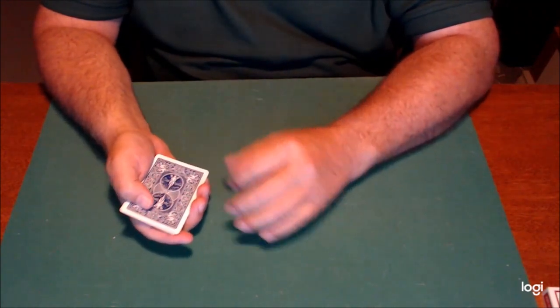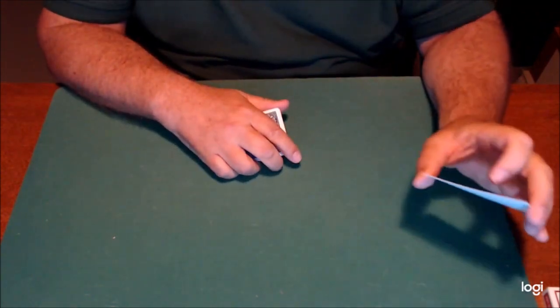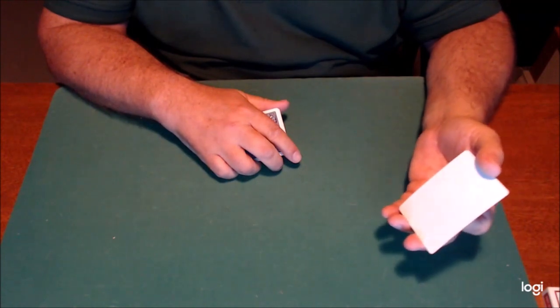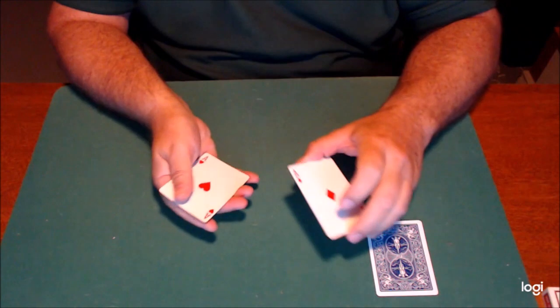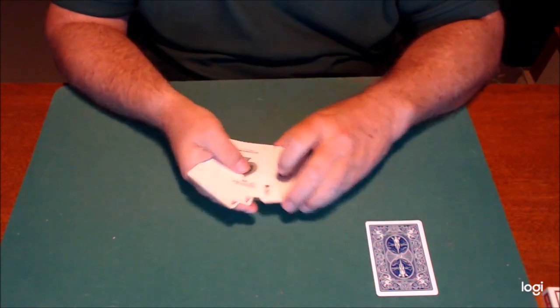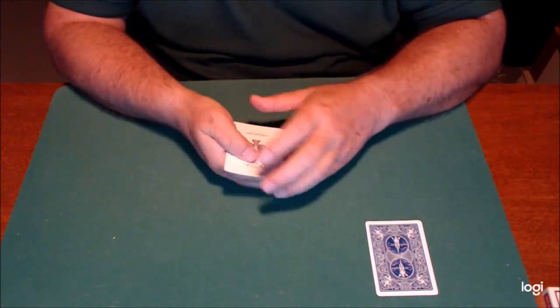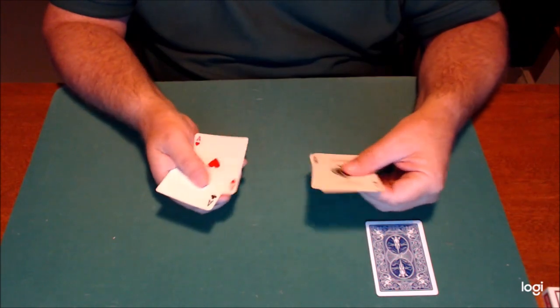This is a little packet trick with some different cards, having a blank face card here. Set that aside for a moment. It uses the four aces, and the idea here is to have these four aces turn over within this packet one at a time. You'll see what I mean.